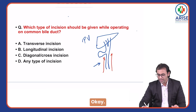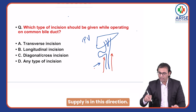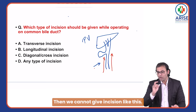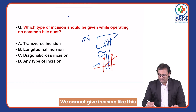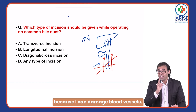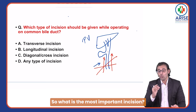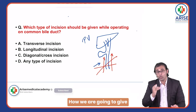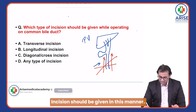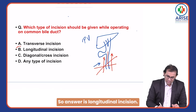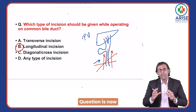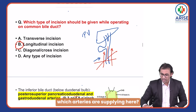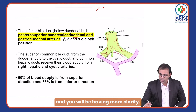When the arterial blood supply runs in this direction, we cannot give an incision like this because it would damage the blood vessels. So what is the most important incision? The incision should be given in this manner — a straight line. So the answer is a longitudinal incision.